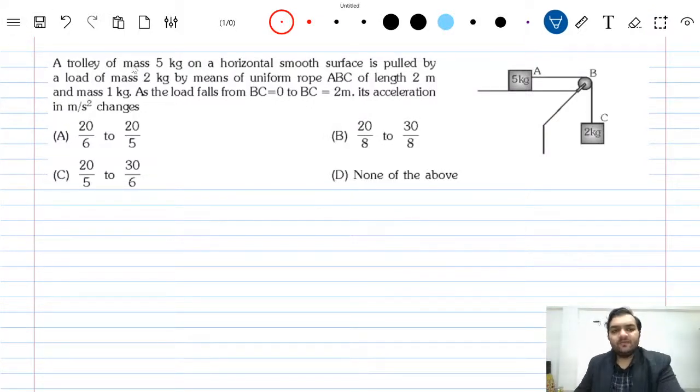We have a trolley of mass 5 kg on a horizontal smooth surface, pulled by a load of mass 2 kg by means of a uniform rope ABC of length 2 meters and mass 1 kg. This rope has mass 1 kg. As the load falls from BC equals 0, initially the system is like this.